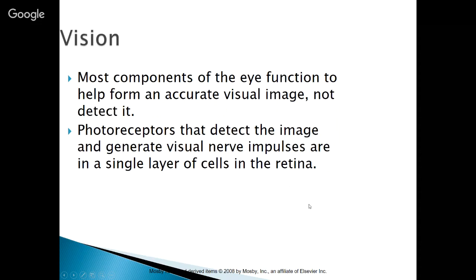Moving on to vision: most components of the eye function to help form an accurate visual image, but not detect it. Photoreceptors that detect the image and generate visual nerve impulses are in a single layer of cells in the retina.